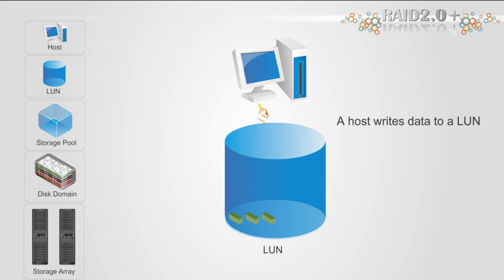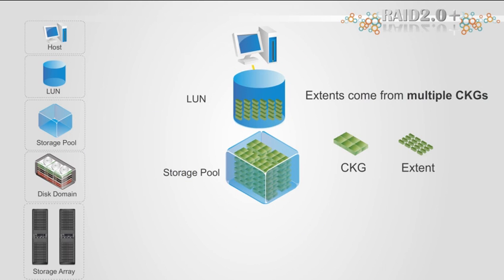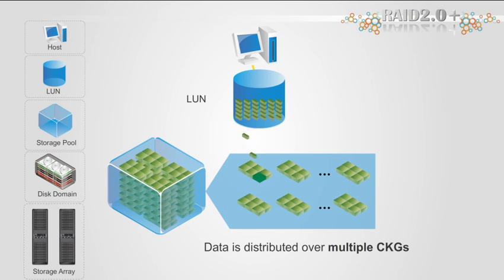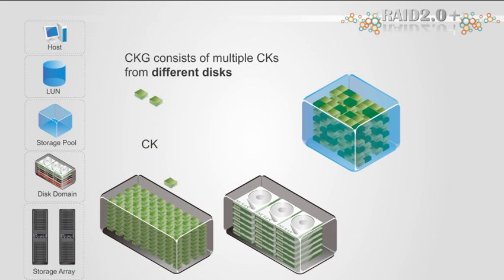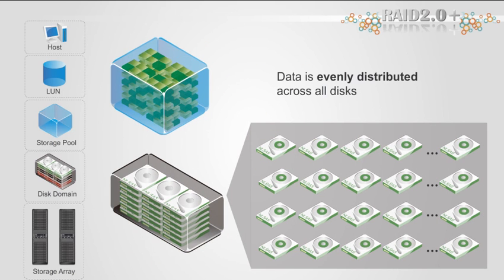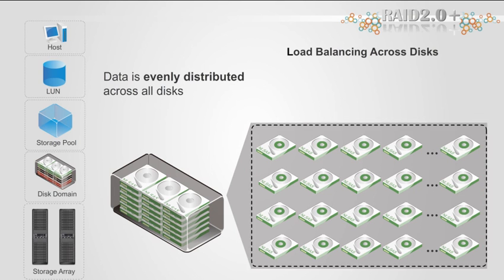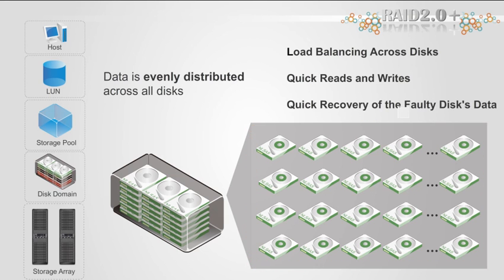Now, let's see how a piece of data is delivered after a host writes it to a LUN. When it reaches the LUN, the data is distributed to multiple extents. Since the extents come from multiple CKGs across the storage pool, the data is distributed over multiple CKGs. Since each CKG consists of multiple CKs from different disks, the data is evenly distributed across all disks in the disk domain. Based on this even distribution of data, all disks in each disk domain are effectively load balanced and can respond to data access requests, resulting in quick data reads and writes. In addition, because data is evenly distributed, all disks in a disk domain participate in data reconstruction when a disk fails, resulting in comparatively quick recovery of the faulty disk's data.